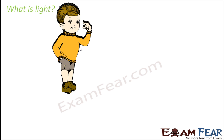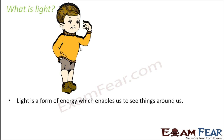Let us start with: what is light? We can see objects in the presence of light. Light is nothing but a form of energy which enables us to see things around us. If there is no light, we will not see anything. It is a form of energy, and that is why light energy can be converted into other forms of energy as well.